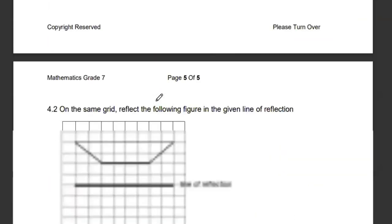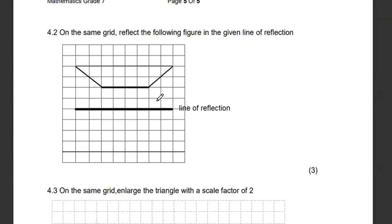Then 4.2, they want us on the same grid to reflect this line. So a reflection, all we need to remember is that distance needs to be the same. We have two blocks from the mirror line or the line of reflection, which means we must also have two blocks this side. Then we draw that line. And then follow two blocks that side, use your ruler, and then two blocks this side. There we go. And then cover this up. So we have this as our reflection.